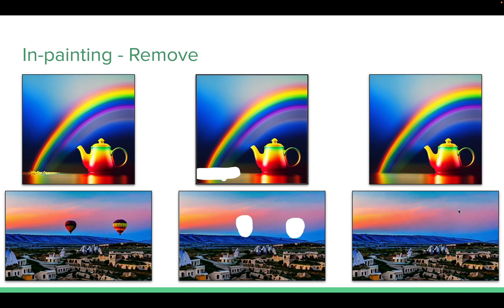Similarly, if there are undesirable portions in the image, we can cover them with a mask and click generate. Most likely, they will be smoothed out and removed. For example, here we have some sort of undesirable area where the generated image didn't do the task properly. We add a mask to it, use the same prompt, click generate, and once the image is out, that particular portion is smoothed out and becomes part of the generated image.